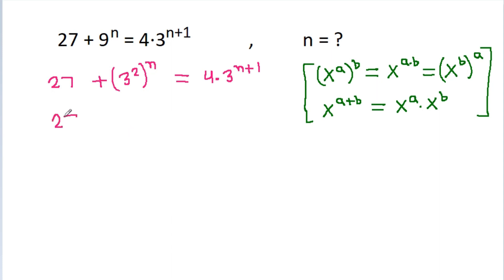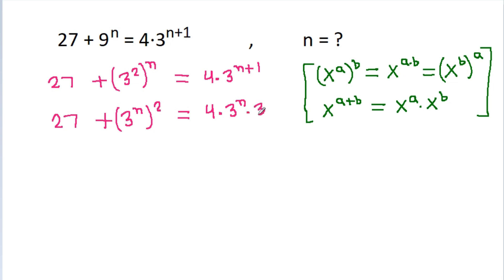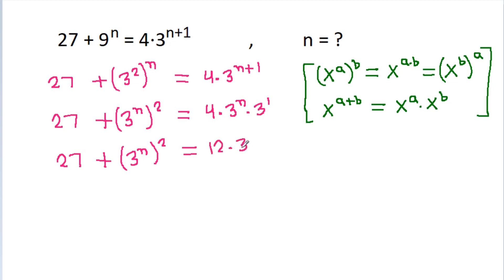So it is 27 plus 3 power 2n — that is, 3 power n squared — is equal to 4 times 3 power n plus 1, which gives 27 plus 3 power 2n is equal to 12 times 3 power n.